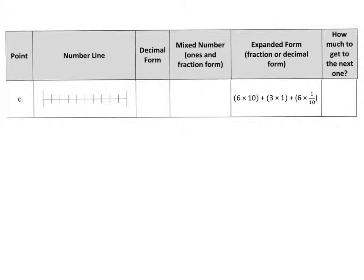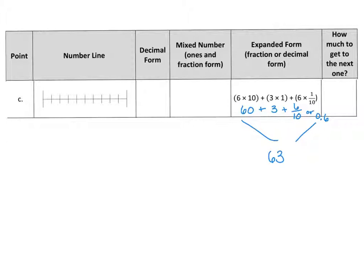In our next example, we have to label point C on the number line, but they're only giving us the expanded form. We need to solve this to fill in everything else in the chart. Let's figure it out. We get six times ten — that's 60. We get three times one — that's 3. And then we have six copies of one-tenth — that becomes six-tenths. Now let's put that all together: 60 plus 3 is 63, so we have 63 wholes and six-tenths. Now we can put this in our chart. 63 and six-tenths as a mixed number: 63 and six-tenths.